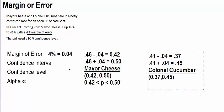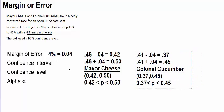And that would be written in interval notation, 37% to 45%, and inequality notation, you would expect the population parameter to be between 37% and 45%. So here we've constructed the confidence interval for both Mayor Cheese and Colonel Cucumber. You can also write it as a percent.